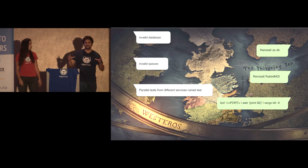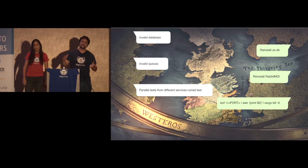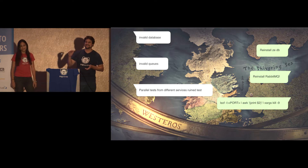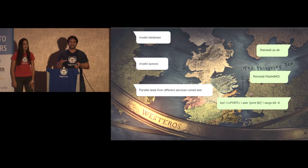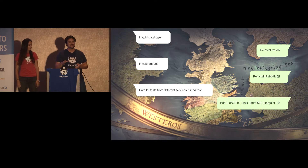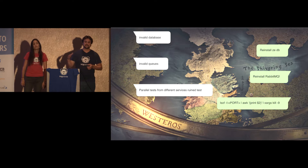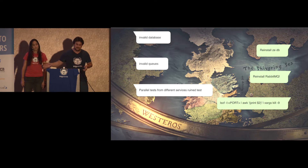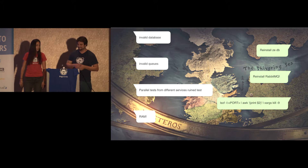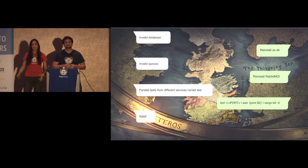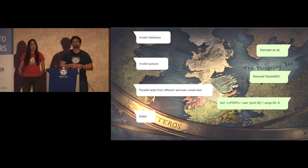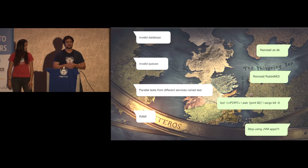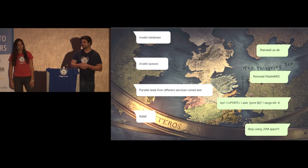Here we got super creative. We had about five lines of Bash at the start of each test which would scan whatever ports the test would need. And if there were any processes holding those ports open, we would kill them. And of course, nothing is complete without RAM problems — so we seriously thought about stopping using JVM apps altogether.